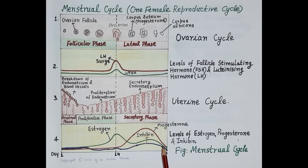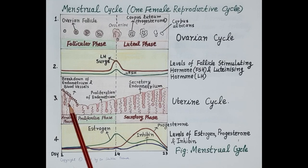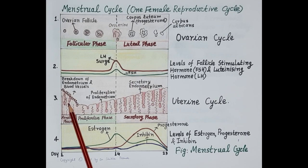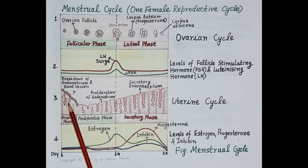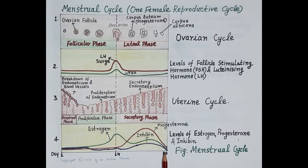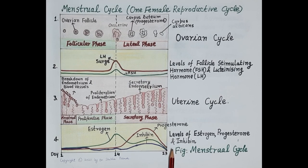A sudden fall in the levels of progesterone and estrogen causes breakdown of the endometrial lining and blood vessels. The broken endometrial tissue and blood pass from the uterus into the vagina as menstrual flow — a process called menstruation. Menstruation confirms that pregnancy has not occurred and happens because of the fall in levels of progesterone and estrogen.